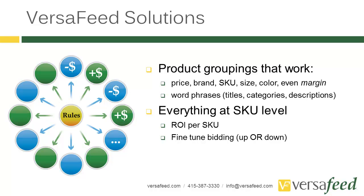So the VersaFeed solution. What we're trying to do is allow product groupings that are much more granular. We allow you to make groupings based on the price of the product, the brand, the SKU, the size, the color, and even your profit margin. You can even create groups based on whether your product is on sale. We also allow you to search for certain words — for example, if you had a leather sandal that wasn't in a separate category, you could say: if I see the word 'leather' in either the title or the description, push it into a separate group. So you can search for keywords within titles and descriptions to make very granular groups.